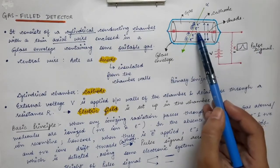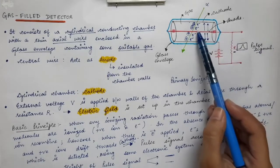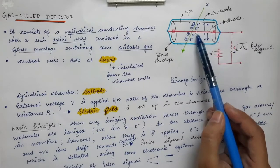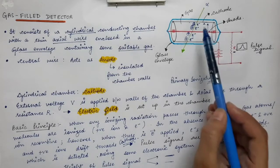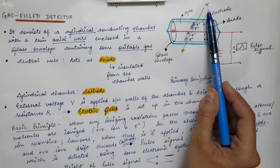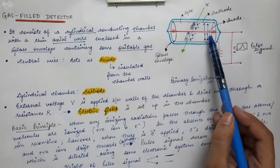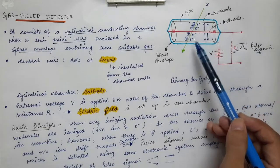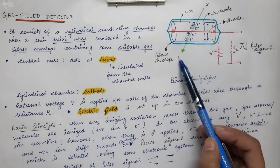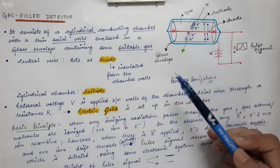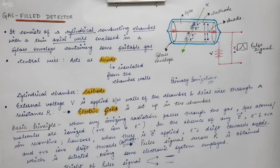A pulse signal is observed when electrons flow in the circuit, and electrons flow only when they reach the anode wire. Electrons are formed only due to the incoming particle, which means the pulse signal is observed only when a charged particle enters the detector. Only then will primary ionization occur and a pulse signal be observed. If the alpha particle passes through without making any ionization, there will be no pulse signal and the particle will not be detected.